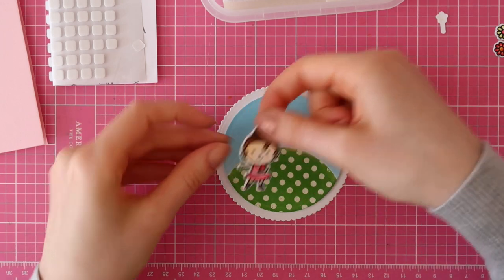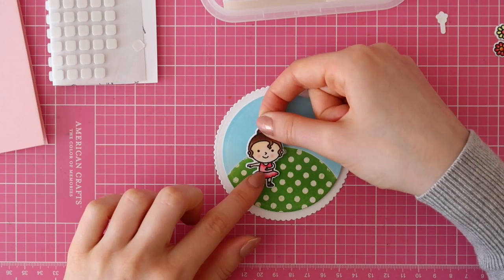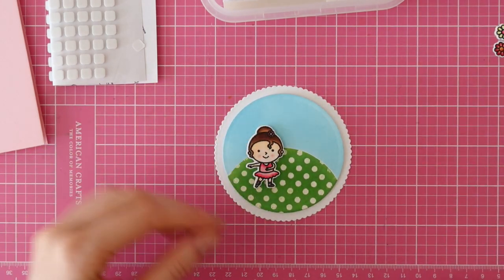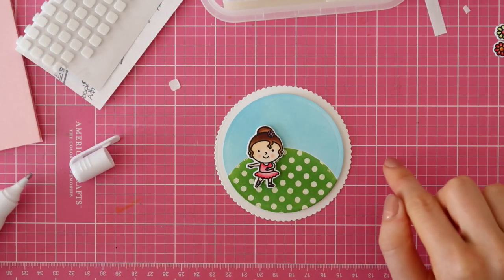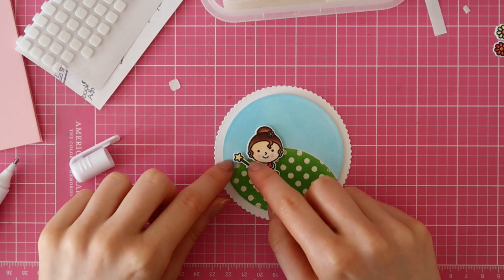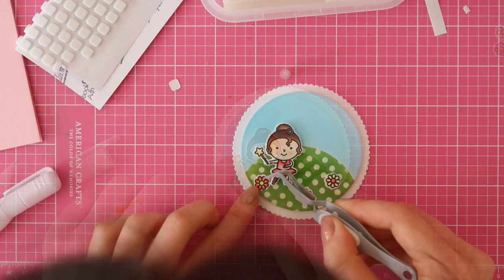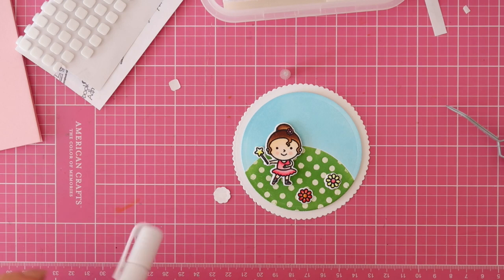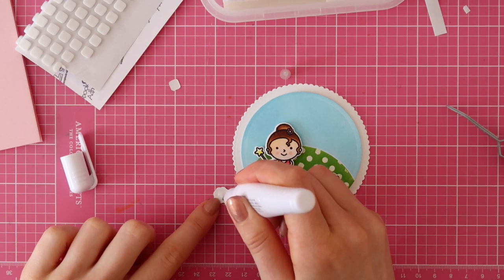I'm also using some smaller foam squares to adhere the little ballerina and to adhere some of the flowers. I also used the Tonic Nuvo Smooth Precision glue pen to adhere that magic wand and then to adhere the orange flower.